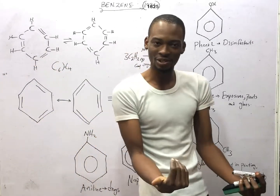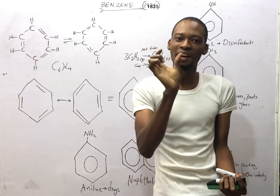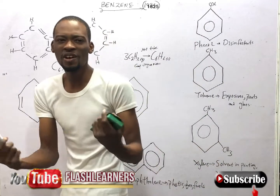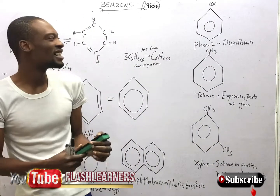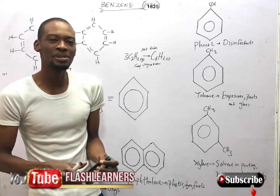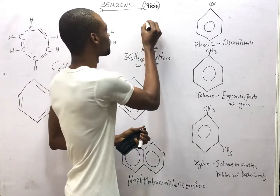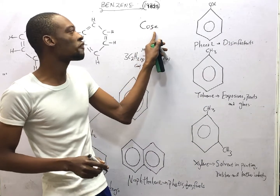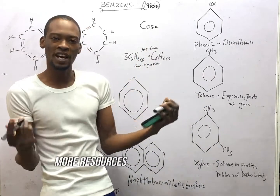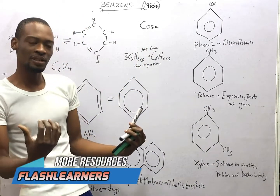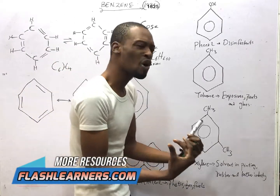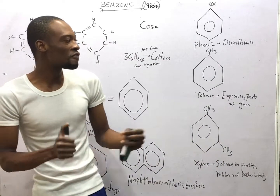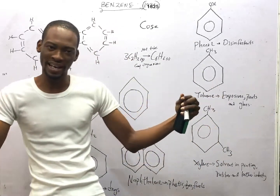So far in organic chemistry, I have been able to establish that organic chemistry is the study of the chemistry of carbon and its compounds, except the carbides, oxides, sulfides and carbonates of carbon — these are the exemptions. Now, the compounds of carbon alone are more than the compounds of every other element combined.